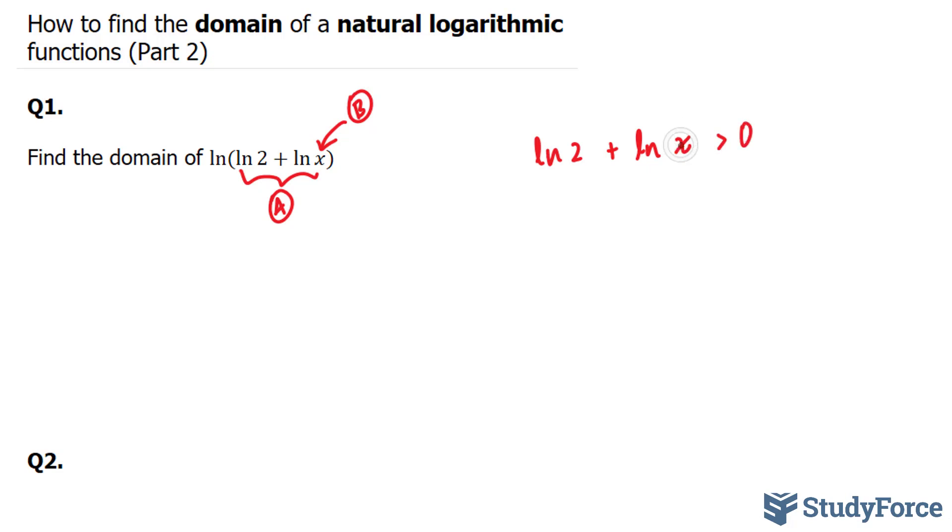So now we have to solve for x. And to do that, I'm going to bring this over, and I end up with negative ln(x). And the reason why it becomes negative is because it was positive originally, and ln(2) on the left side. The next thing that I'll do is use the power rule and bring this negative 1 as an exponent to this value right here. So we end up with ln(2) is greater than ln(x^-1).